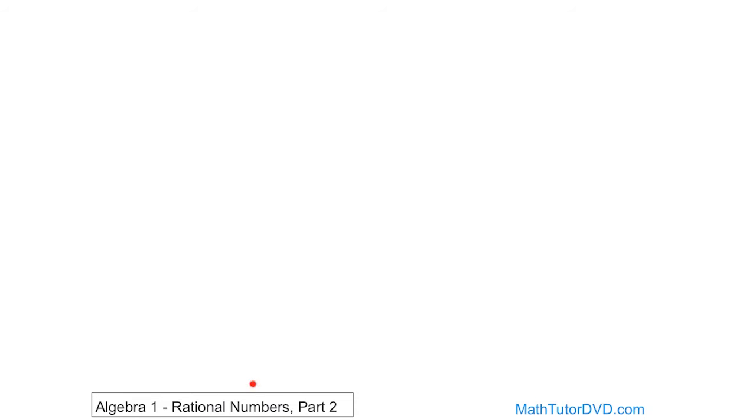Hello, welcome back to Rational Numbers. We're just going to wrap up this concept by giving you a helpful rule. In the previous section, I taught you how to see which rational number, which fraction is bigger — go ahead and find common denominators, and you can see easily which one's bigger and which one's smaller. If you haven't looked at that, go look at it in the previous section. But actually, there's a helpful rule that's probably worth your time to learn, and I'm just going to show it to you real quick.